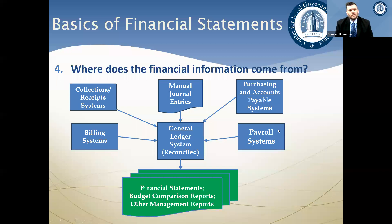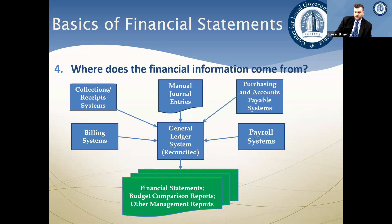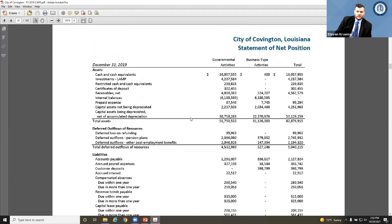All this information comes from journal entries made in your general ledger, which in turn comes from various subsidiary ledgers such as utility billing software that track individual accounts. All this information gets fed into the general ledger — the overall accounting record — and is then rolled up into the financial statements themselves. Everything you see on Covington's financial statements was summarized and pulled in from the different accounts within those ledgers.